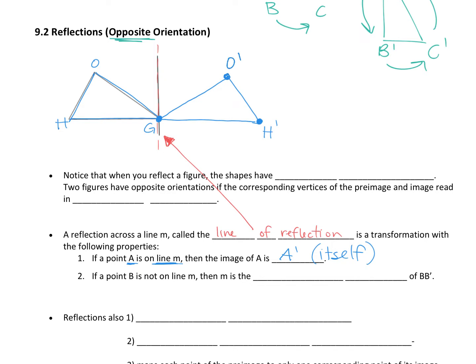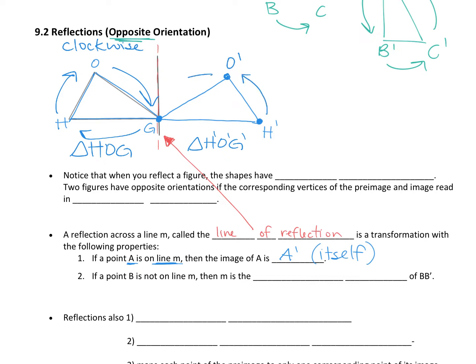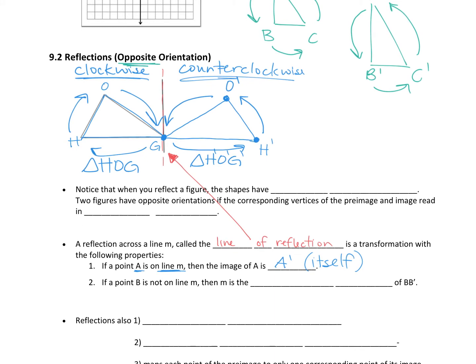If I call the first triangle HOG, what direction did I move? Clockwise — this one's going clockwise. Now, if this was a slide, this next one would also be going clockwise. But this isn't a slide; this is a flip. When you flip it, if I now name it H prime O prime G prime, it's counterclockwise. So when they talk about orientation, they're asking: does it move in the same direction, or does one move the opposite direction? Clockwise and counterclockwise is called opposite orientation.